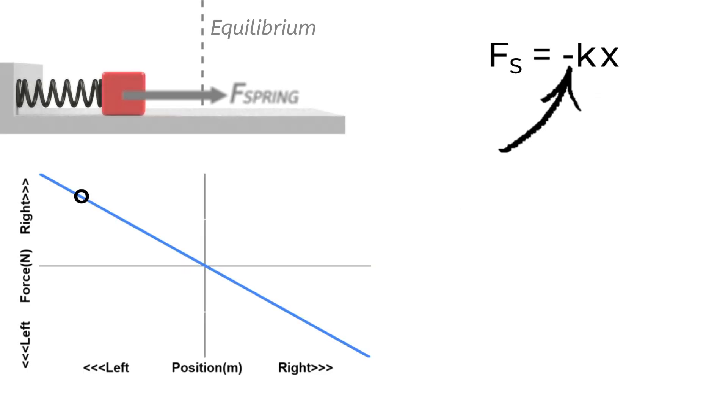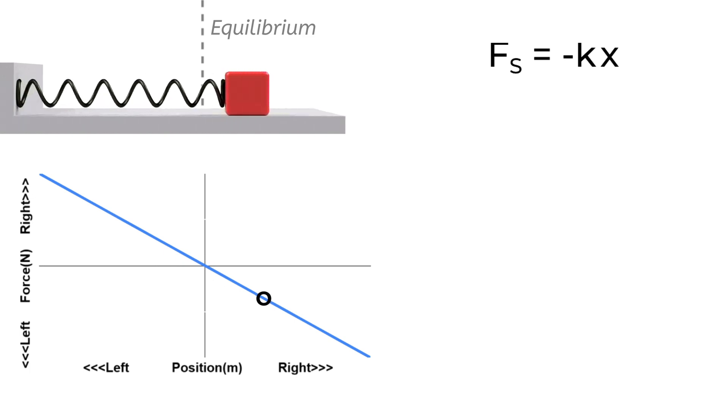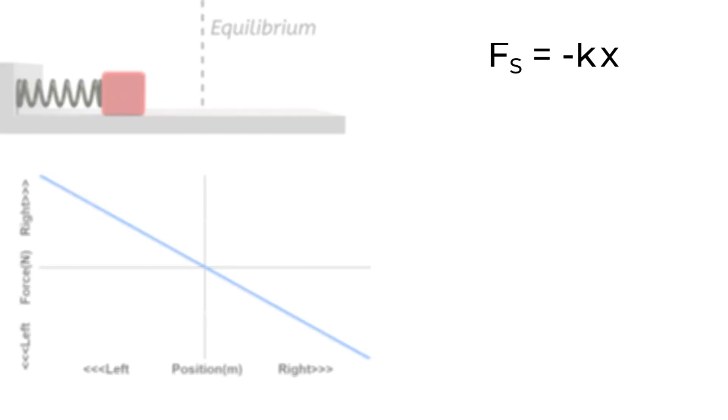The negative tells us that if the block is pushed to the left, then the spring is going to be pushing on the block to the right, and vice versa. It's easiest to see if you graph the force by the spring as a function of the block's position. When the block is to the left of equilibrium, the spring is pushing back to the right. Because the spring is the only thing pushing the block around, we're going to take that equation, Hooke's Law, and substitute it into Newton's second law for the block.